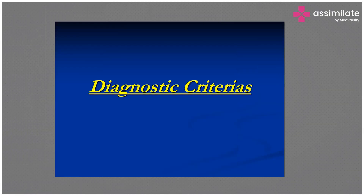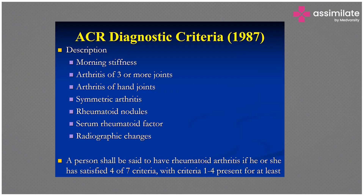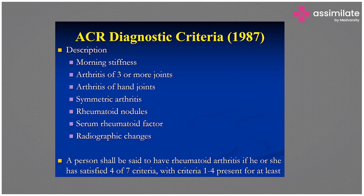The ACR — American College of Rheumatology — diagnostic criteria is a measurement on defined scales. As described, the criteria include morning stiffness, involvement of three or more joints, arthritis of the hand joints involving the small joints, and symmetric arthritis.